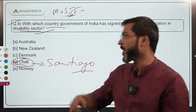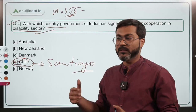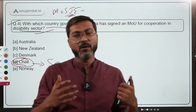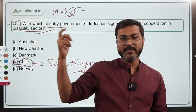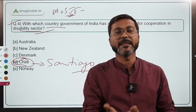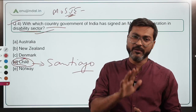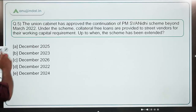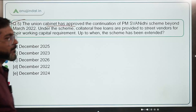Both the governments of India and Chile will focus on collaboration in the disability sector. Moving ahead to Question 5: the Union Cabinet has approved the continuation of the PM SVANidhi scheme.